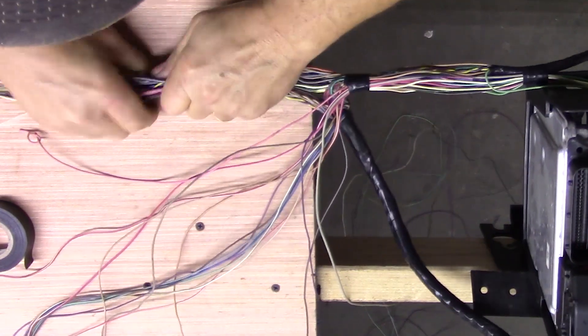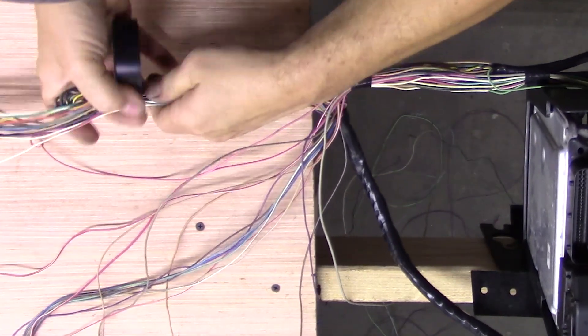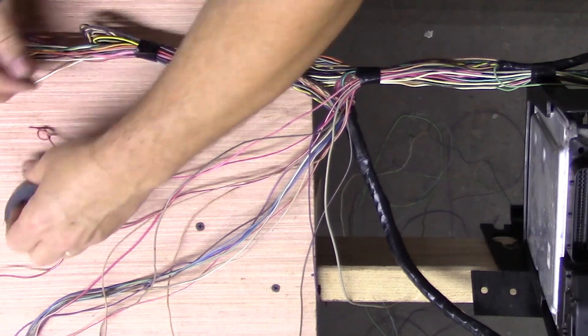Bunch the excess loop of wires together and tape them to the main bundle. At this point the harness is already looking more organized.